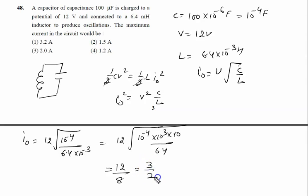So when we will solve this 12 by 8, we will see it is 3 by 2, 3 by 2 is 1.5 ampere. So option 2 is the correct answer of this problem.